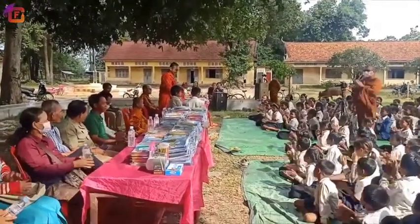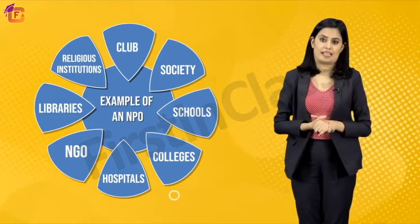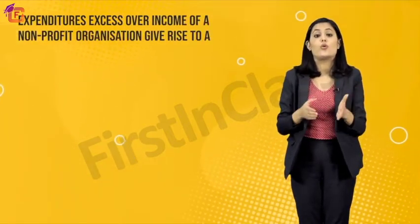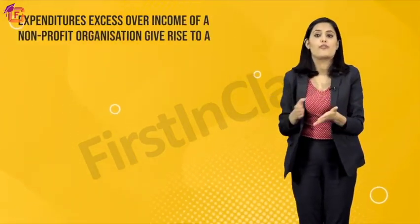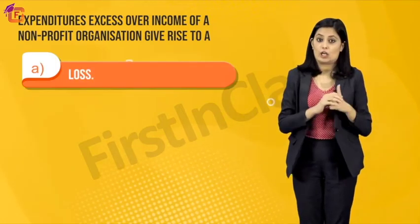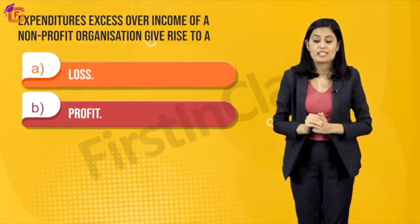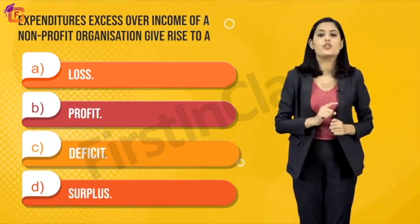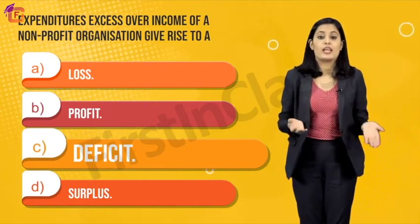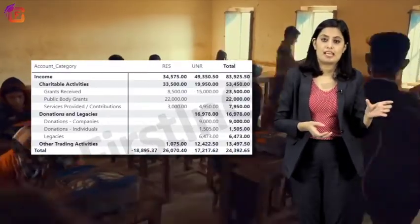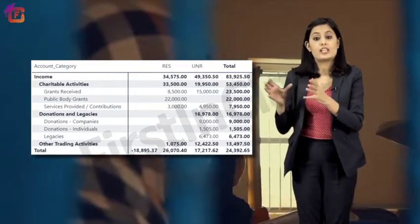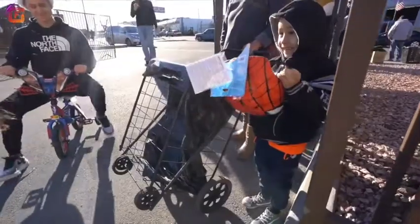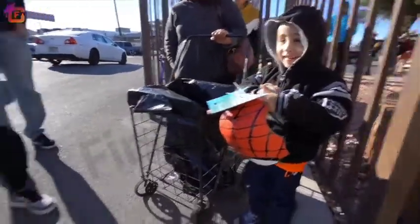Let's take another question: Excess of expenditure over income of a non-profit organization gives rise to — A) a loss, B) a loss, C) deficit, D) surplus. The right answer is option C — deficit. If the total of the debit side is more than the total of the credit side, it is known as excess of expenditure over income, which is called a deficit.